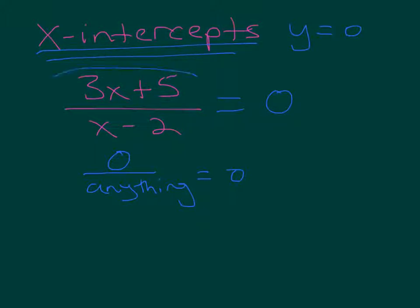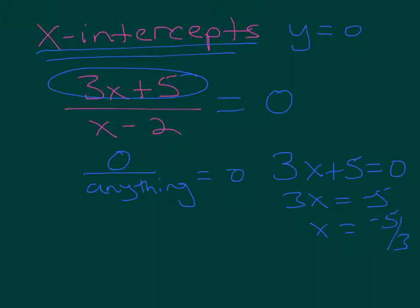Because all I need to do is set this guy equal to zero, and that will tell me where it crosses the x-axis. So I'm going to have 3x plus 5 equal to zero. So 3x equals negative 5, and x equals negative 5 thirds. My x-intercept is at negative 5 thirds.